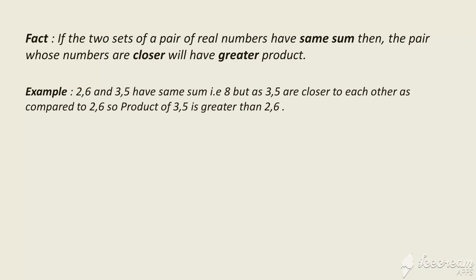What's the mathematical proof of it? We can easily prove it by this relation: 4ab = (a + b)² − (a − b)². As (a + b) is going to be the same in both cases, numbers which are closer to each other will have a smaller (a − b)² term and therefore a greater product.